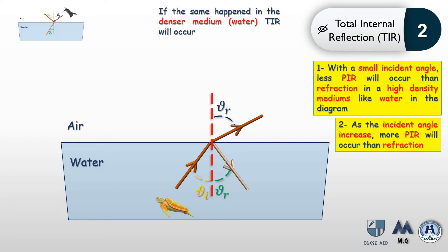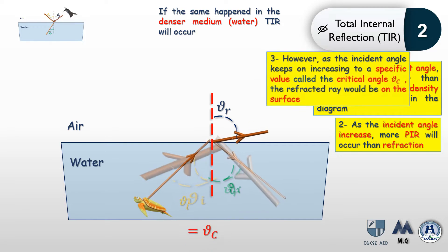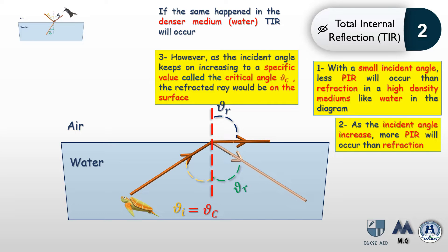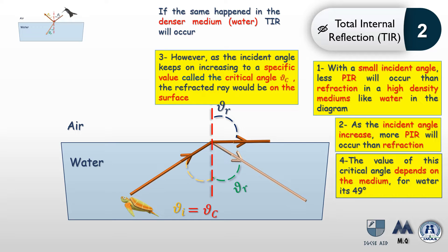If the angle of incidence is increased, more of the ray will be reflected than refracted — for example, from 20% reflected up to 50% reflected. If we further increase the angle of incidence, we reach a specific value called the critical angle, abbreviated as θc. At this value, the refracted ray lies on the surface between air and water, and the angle of refraction is 90 degrees. This only happens in denser mediums.